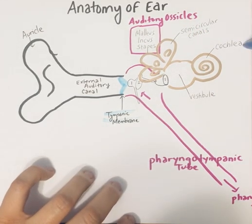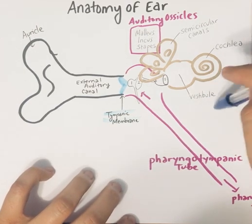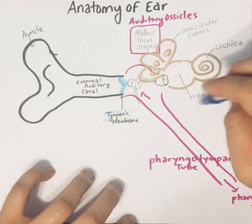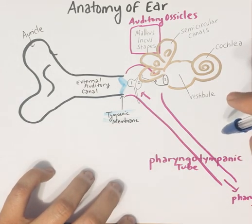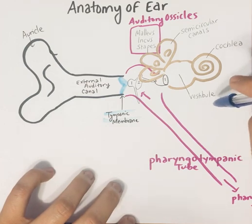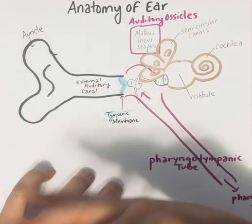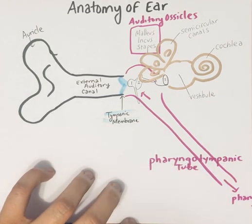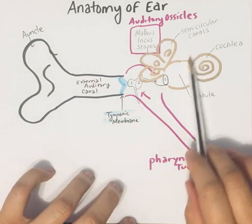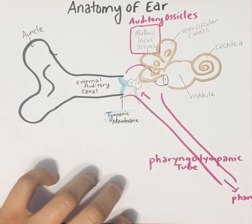Your cochlea is responsible for hearing — it contains the organ of hearing called the organ of Corti. The vestibule is used for static equilibrium, meaning balance when you tilt your head forward, backward, or side to side while standing still. Your semicircular canals are responsible for dynamic equilibrium — when you're spinning or doing linear movement like moving in a car. These are all portions of your inner ear: the vestibule, cochlea, and semicircular canals.